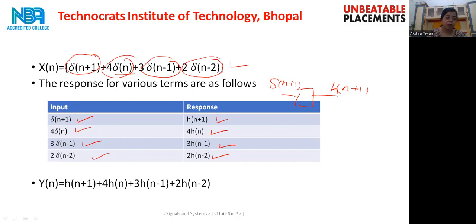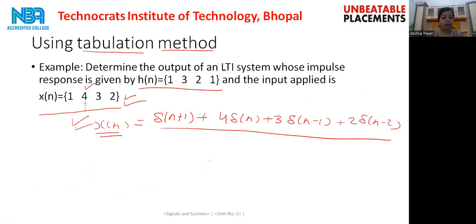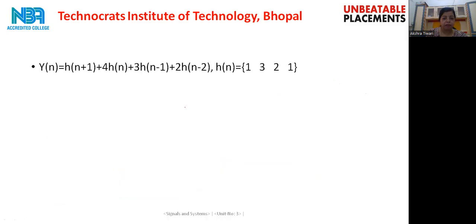The output yn is the summation of the individual responses of all these inputs. So yn equals the transformation of δ(n+1), which is h(n+1), plus transformation of δ(n), which is h(n), plus transformation of δ(n−1), which is h(n−1), plus transformation of δ(n−2), which is h(n−2). Ultimately, yn equals h(n+1) + 4·h(n) + 3·h(n−1) + 2·h(n−2). We must now calculate the values of h(n+1), h(n), h(n−1), and h(n−2), given that hn equals {1, 3, 2, 1}.